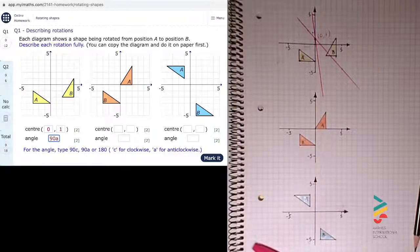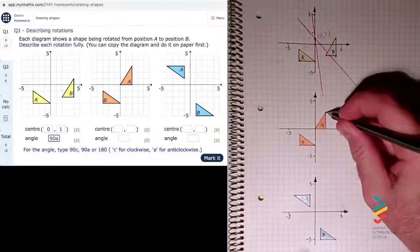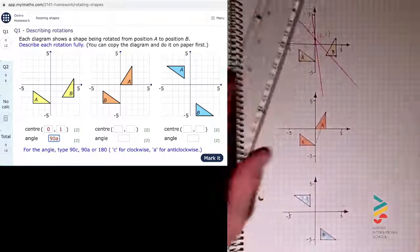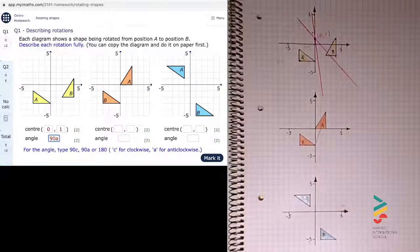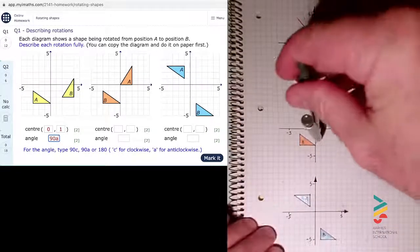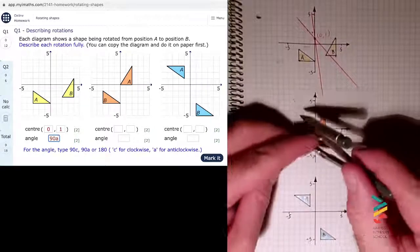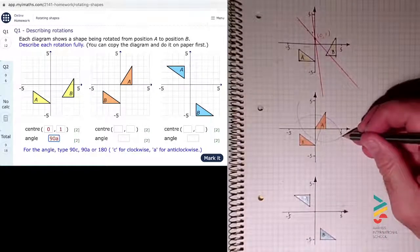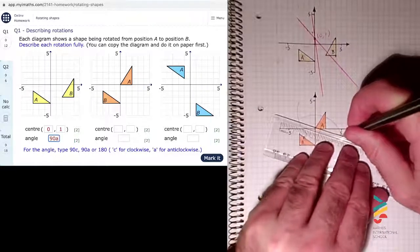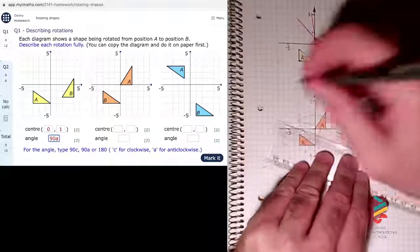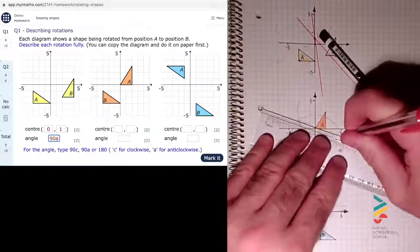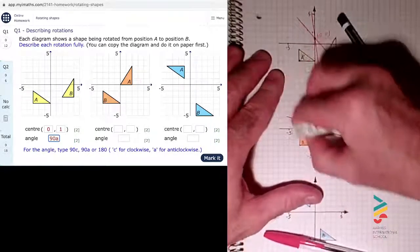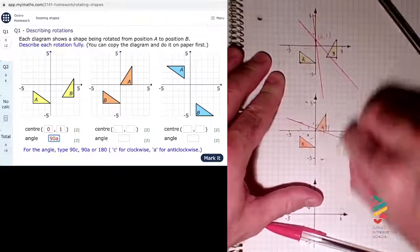On to the second shape. I'm going to do this a little bit more quickly now. A point there and then its equivalent on shape B over there. Join the two corresponding points. I'm now going to make a perpendicular bisector of the line I just drew. Compass at one end, compass at the other end keeping it the same length. They meet at two points, join up those two points. I'm going to do that in red and rub out the rest because it's starting to get cluttered.